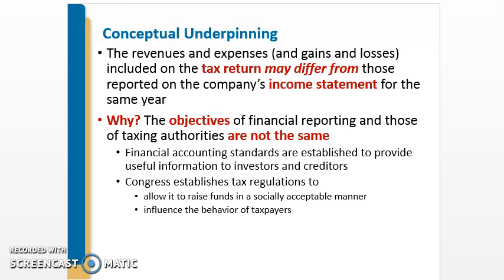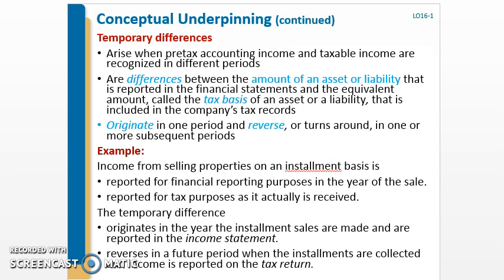Most of the differences tend to be temporary, but we'll also talk about some permanent differences. Temporary differences are really where we're going to be focusing, because that is what leads to deferred tax assets and liabilities. Temporary differences arise when pre-tax accounting income and taxable income are recognized in different periods. At the end of the day, you need to determine: is this due to a temporary difference or a permanent difference? If it's temporary, that's when we start considering deferred tax assets and liabilities.